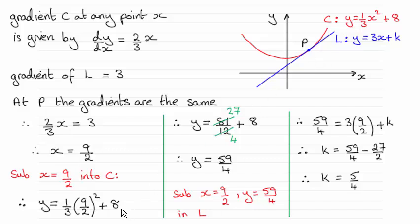If we do that, as you can see here, it turns out to be 59 quarters, 59 over 4. And I can now substitute these values for x and y back into the equation of L. And that will give me the value of k. And that I've done here. And as you can see, it turns out that k equals 5 quarters.